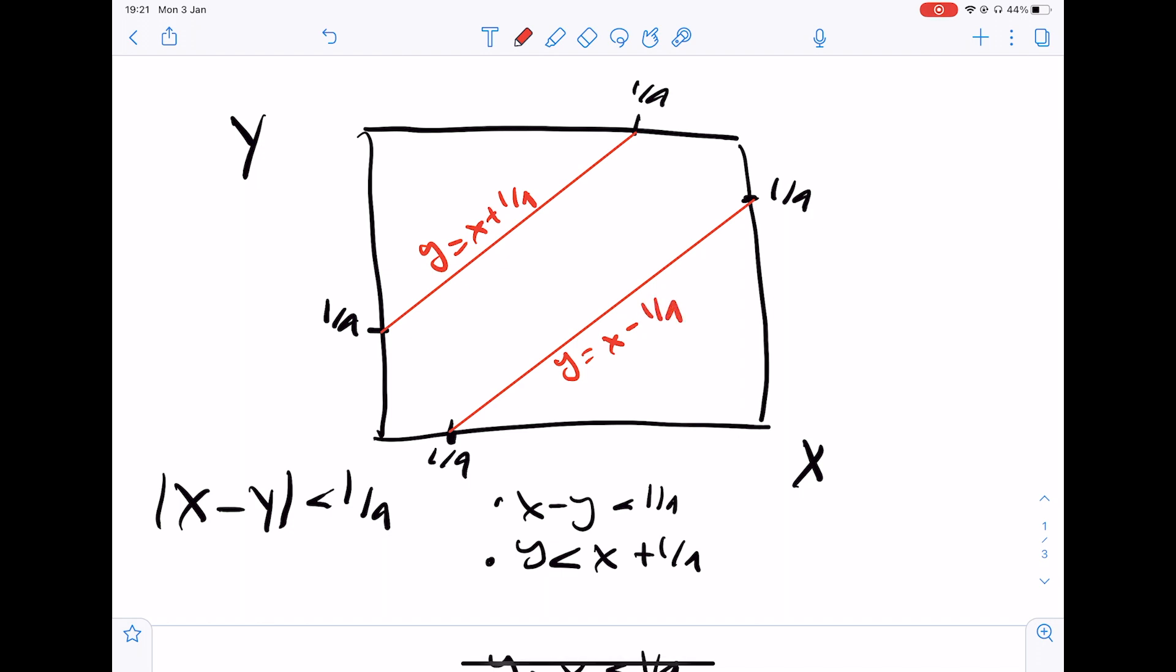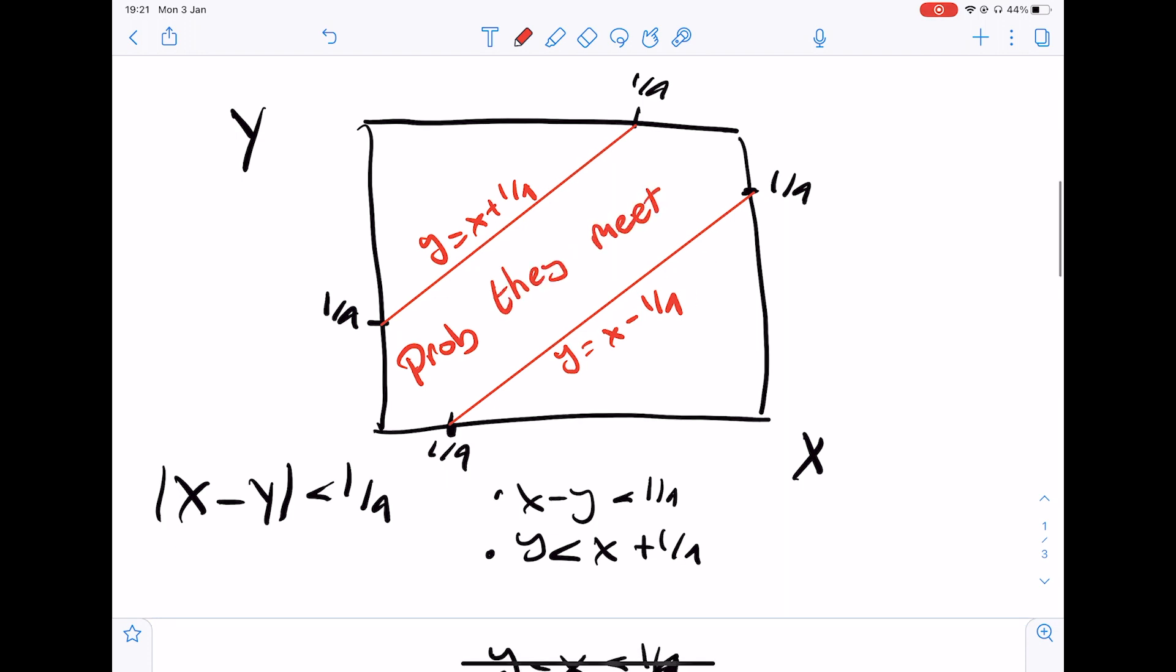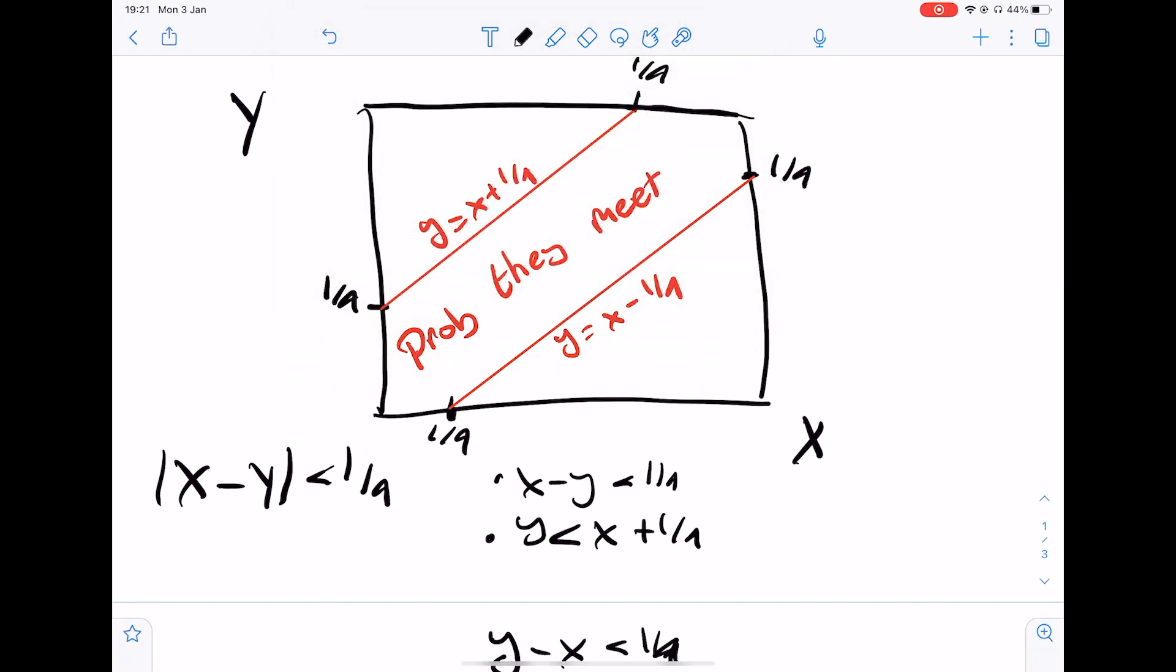So now the probability we're looking at is just here. This is the probability that they meet. Now the question seems to be a bit more easier now. We only need to work out the area of this region here.